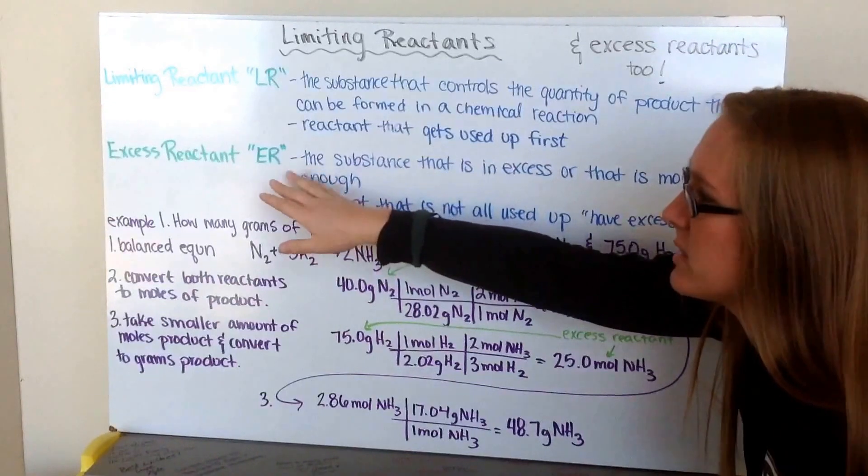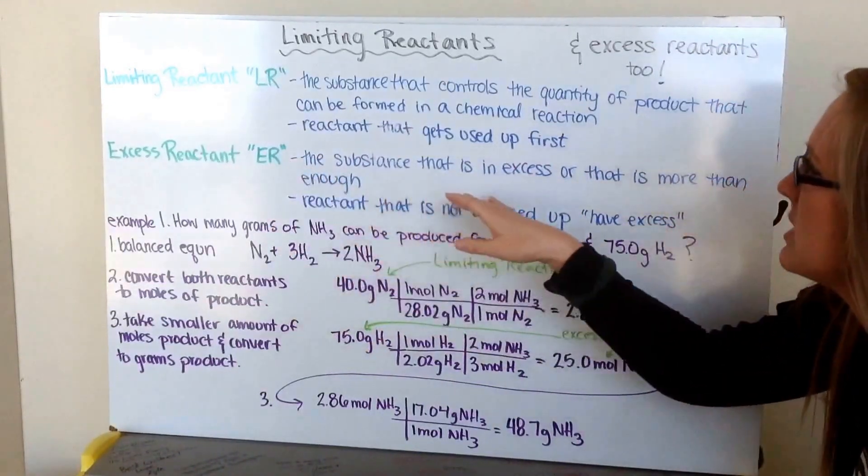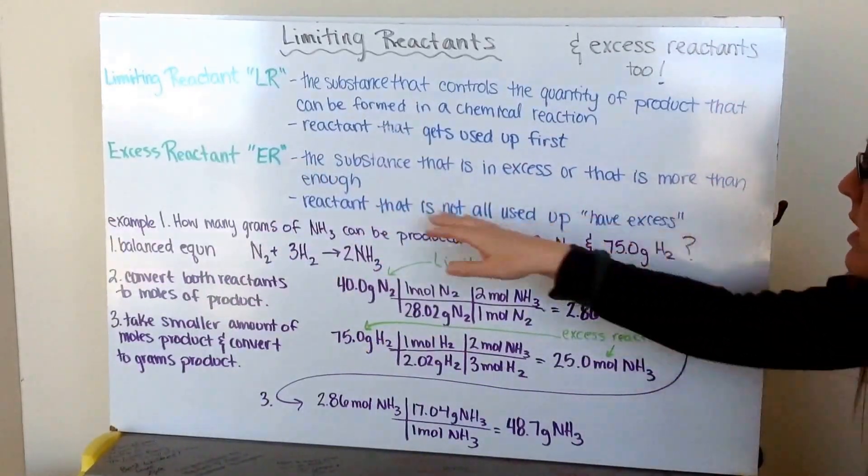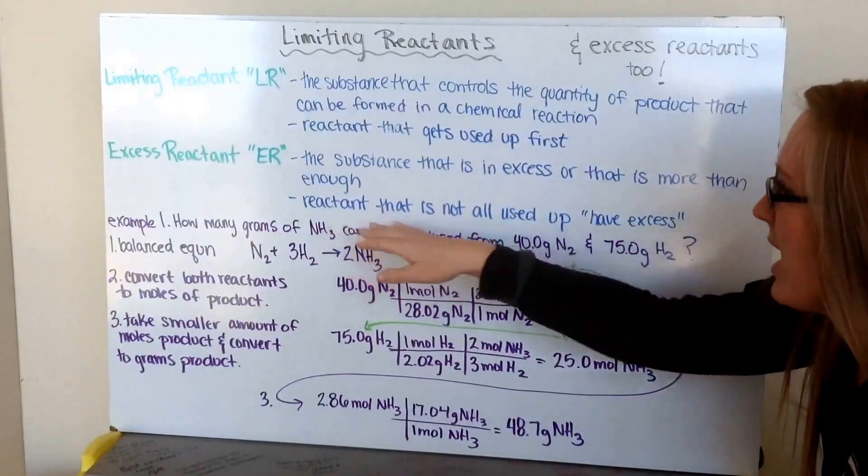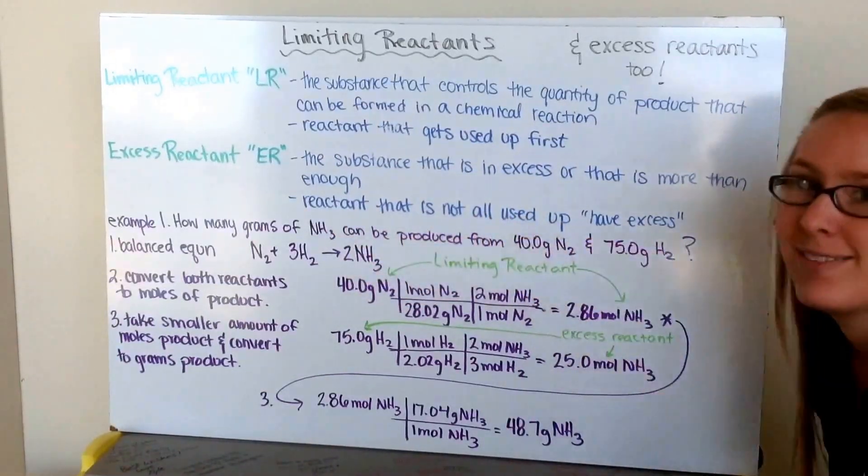Your excess reactant, abbreviated ER, is a substance that is in excess or that is more than enough. This is the reactant that is not all used up or you have excess.